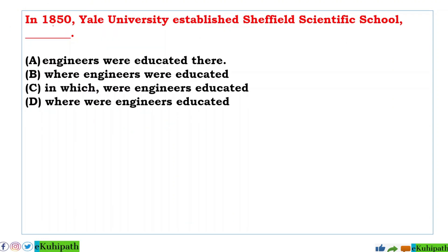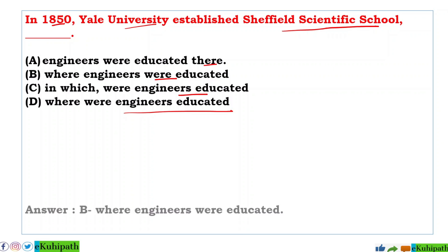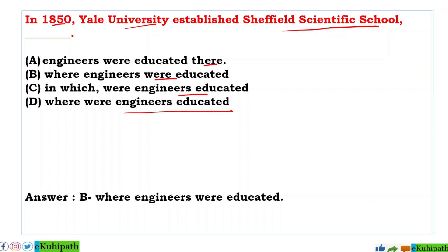Next: In 1850, Yale University established Sheffield Scientific School, dash engineers were educated. Option A: 'engineers were educated there', B: 'where engineers were educated', C: 'in which where engineers educated', D: 'where were engineers educated'. The answer is B — 'where engineers were educated'. In 1850, Yale University established Sheffield Scientific School, where engineers were educated.